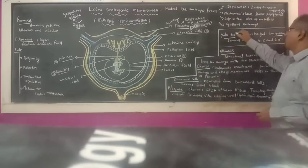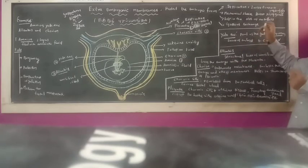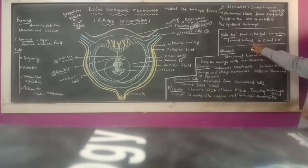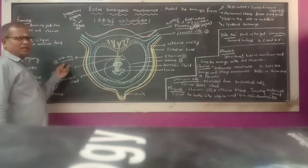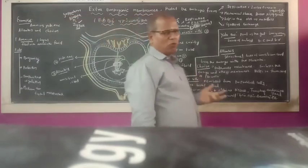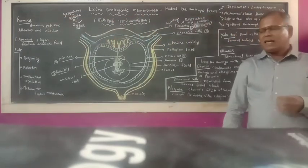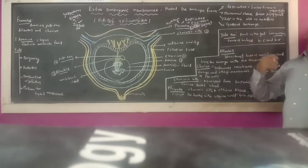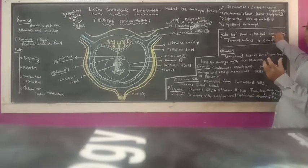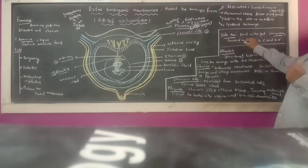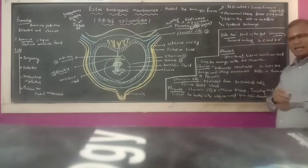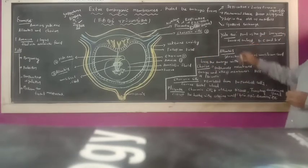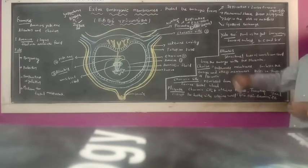Next one is the Yolk Sac. It is part of the gut. It is the source of the earliest blood cells. The yolk sac is an important extra-embryonic membrane serving as the source of earliest blood cells.